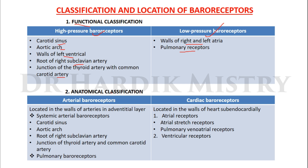Anatomical classification of baroreceptors: arterial baroreceptors and cardiac baroreceptors. Arterial baroreceptors are located in the walls of the arteries in the adventitial layer. Systemic arterial baroreceptors are present in the carotid sinus, aortic arch, root of right subclavian artery, and junction of thyroid artery and common carotid artery. There are also pulmonary baroreceptors. Cardiac baroreceptors are located in the walls of the heart, subendocardially, and include atrial receptors and ventricular receptors.